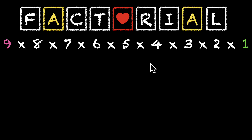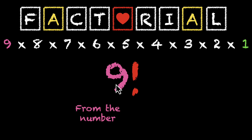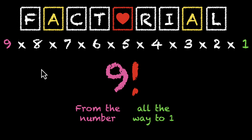Now how do we write them? We use the largest number of the chain and put an exclamation mark after it. So this is called 9 factorial. And this means that we have a chain that goes from 9 all the way to 1 — you're multiplying all the natural numbers from 9 to 1.